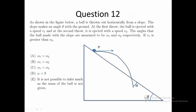Question 12. As shown in the figure below, a ball is thrown out horizontally from a slope. The slope makes an angle theta with the ground. At the first throw, the ball is ejected with a speed V1, and at the second throw, it is ejected with a speed V2. The angles that the ball made with the slope are measured to be alpha1 and alpha2 respectively. If V1 is greater than V2, which of the following is correct?